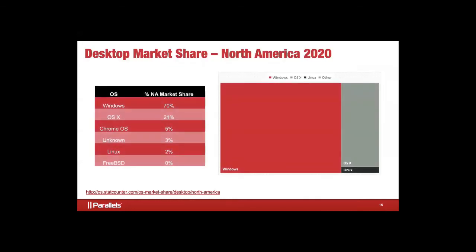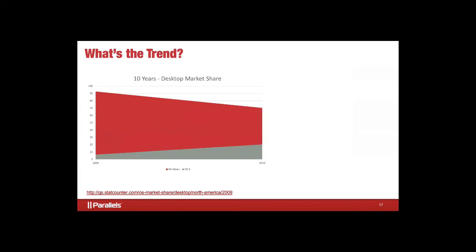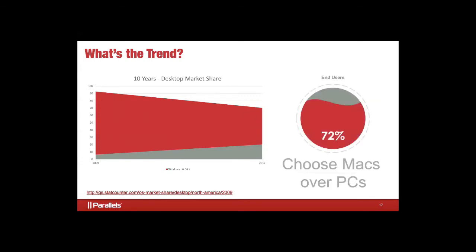Although desktop market share for Windows is over 70%, that trend is falling. Just 10 years ago, 90% of business desktops were Windows-based, but Macs are growing in your organizations. When you ask new end users — especially younger generations coming into the workforce — what they want to use, 72% say they want a Mac. It's what they've been using in their colleges, trade schools, and coding schools. They want to bring that capability to your organization. How are you going to do that if you're a majority Windows network with no Mac management?